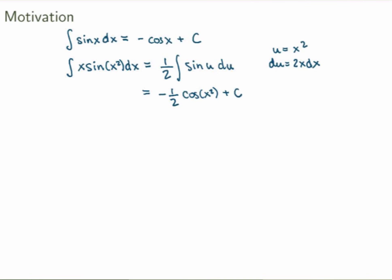The key here is that I needed to use substitution to evaluate that integral, because taking the derivative of the antiderivative involves a function of a function, so I need to use the chain rule. This is what I said when I introduced substitution: substitution undoes the chain rule.